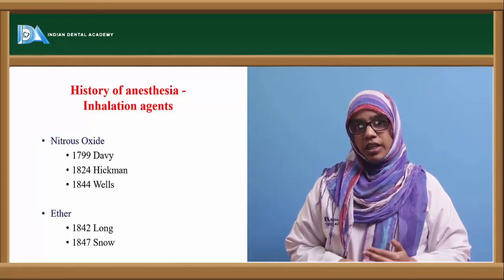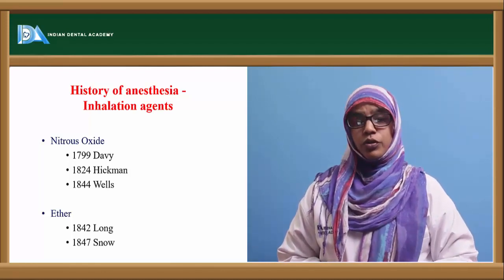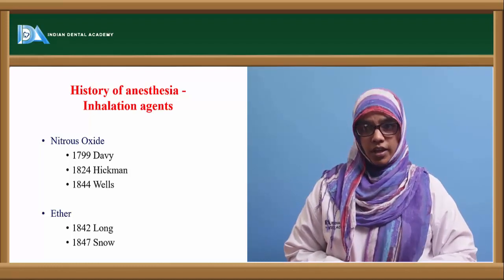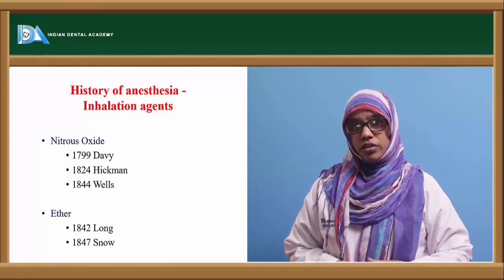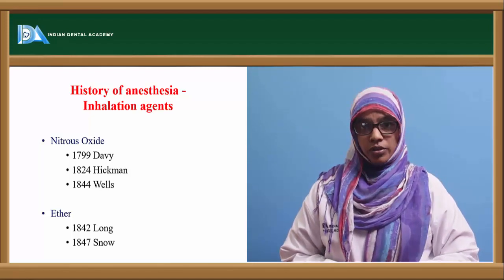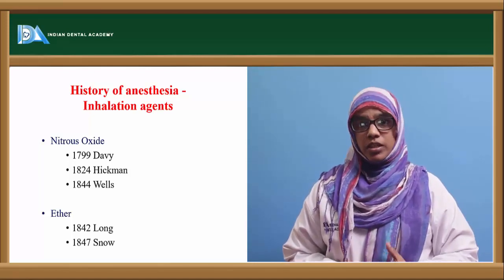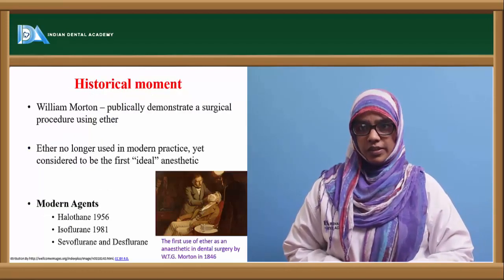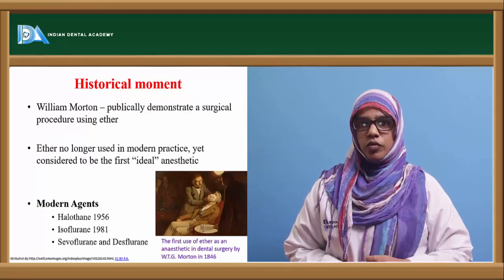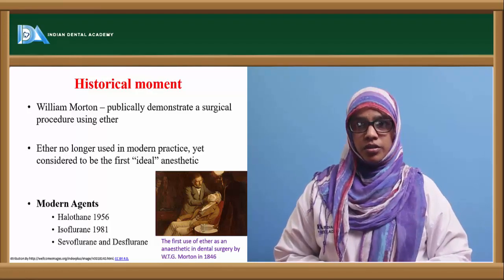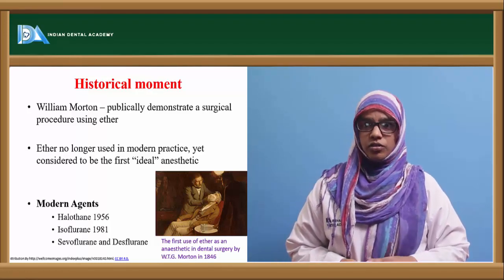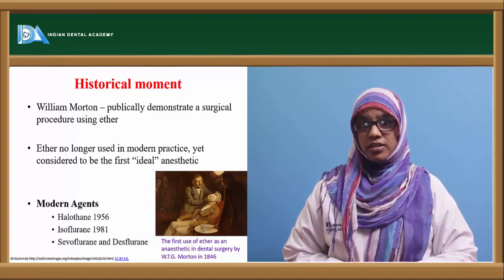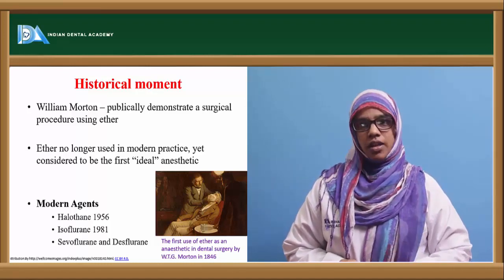In 1842, Long was the one who used ether as an agent to remove a tumor in the neck. Snow, a physician in 1847, was the first one to study the anesthesia process deeply and found out the clinical stages of anesthesia. A historical milestone took place when William Morton publicly demonstrated a surgical procedure using ether, which was considered to be the first ideal anesthetic.